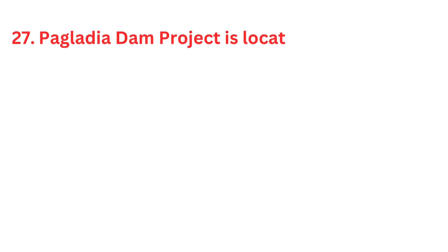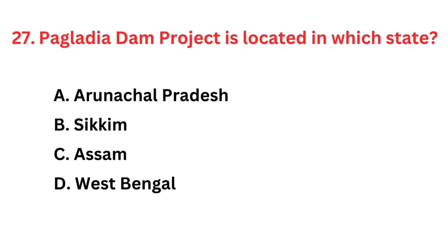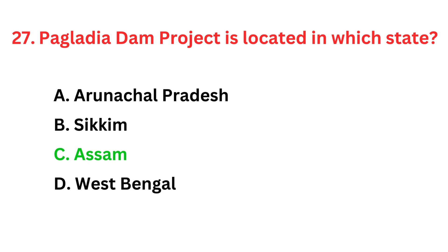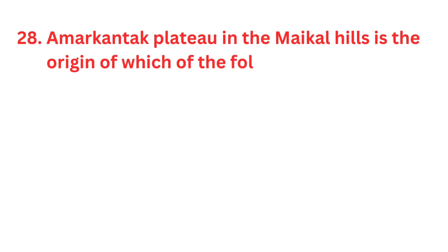Pagladia Dam Project is located in which state? The correct answer is option C: Assam. Amarkantak Plateau in the Maikal Hills is the origin of which of the following rivers?